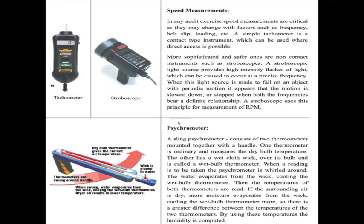Next is the psychrometer, used in thermodynamics. It is a combination of two thermometers — a wet bulb thermometer and a dry bulb thermometer. When both thermometers are combined in one device, it is called a psychrometer, and it measures wet bulb temperature and dry bulb temperature.